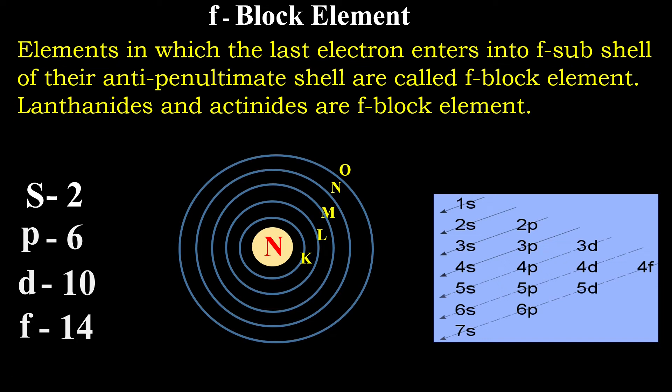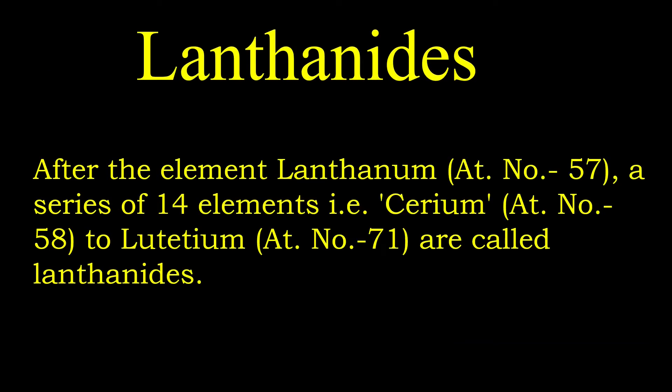Now F-block elements are actually lanthanides and actinides. That's why I will define them. Lanthanides. What it is exactly? After the element lanthanum having atomic number 57, a series of 14 elements. That is cerium having atomic number 58 to lutetium having atomic number 71 are called lanthanides.